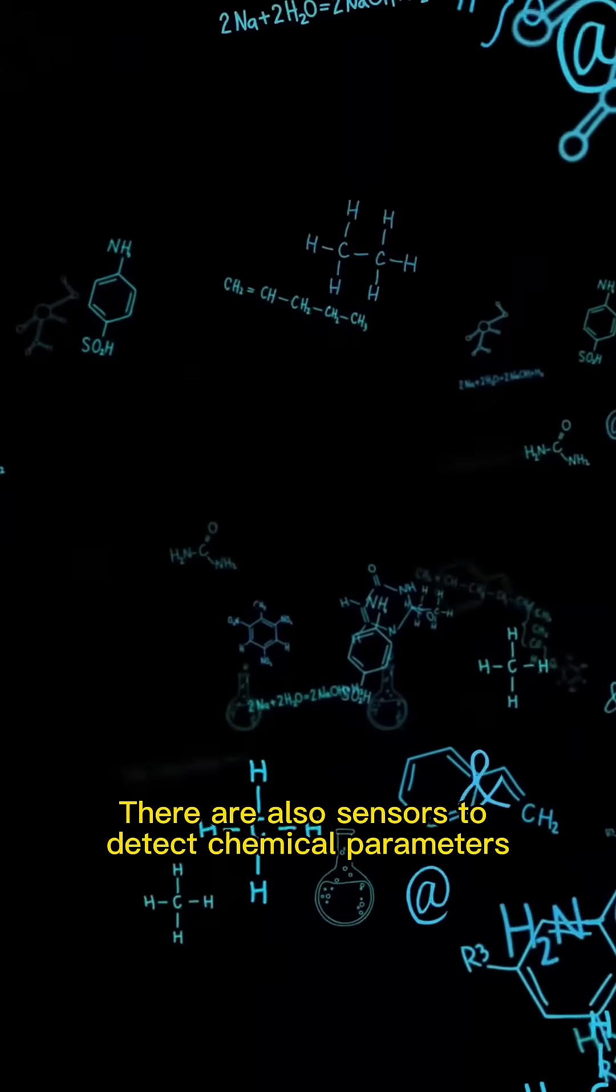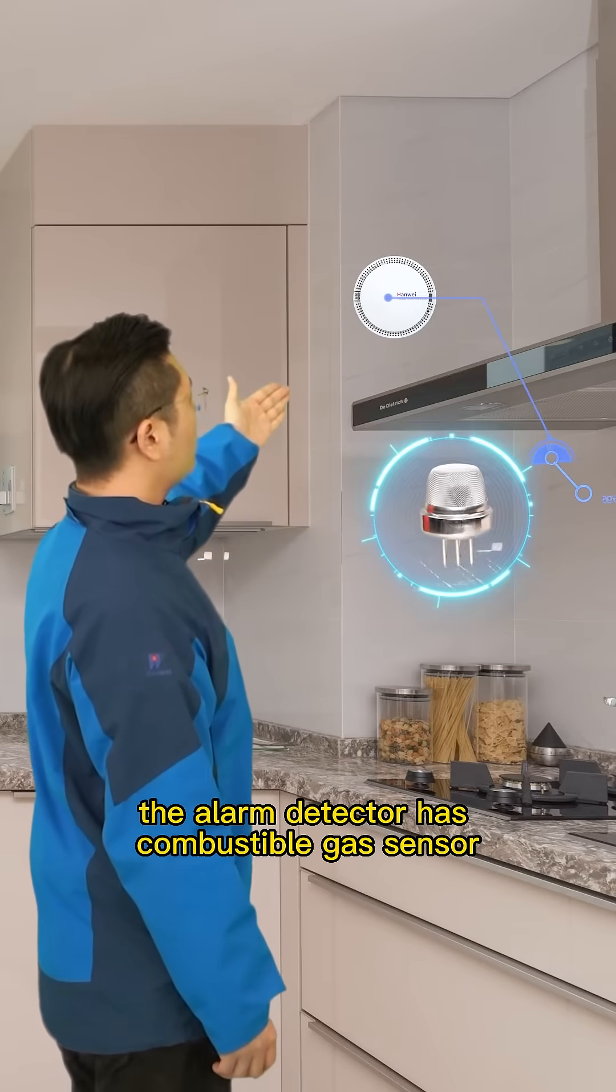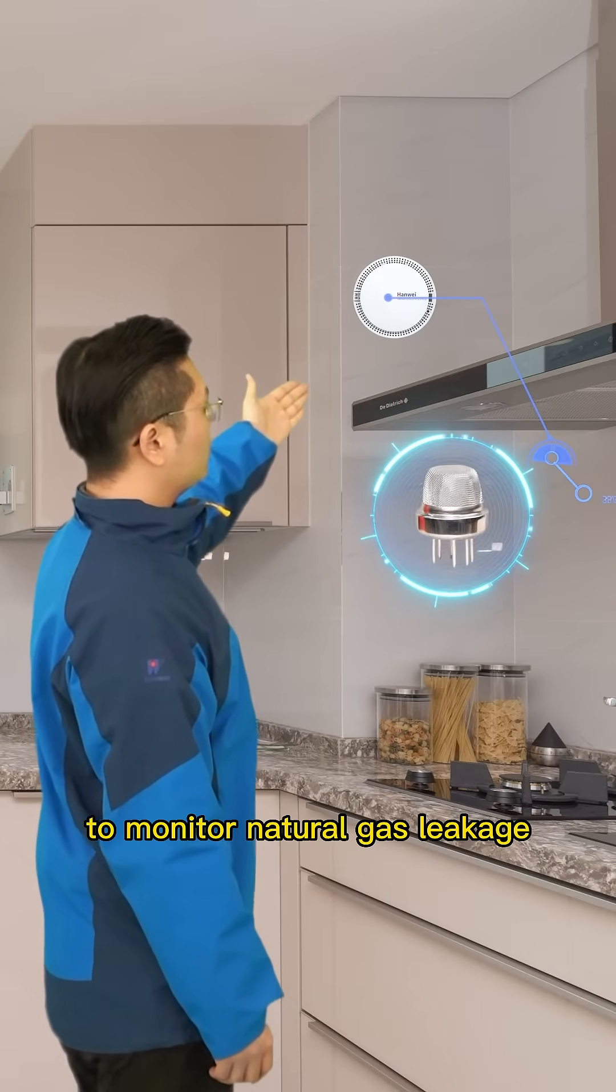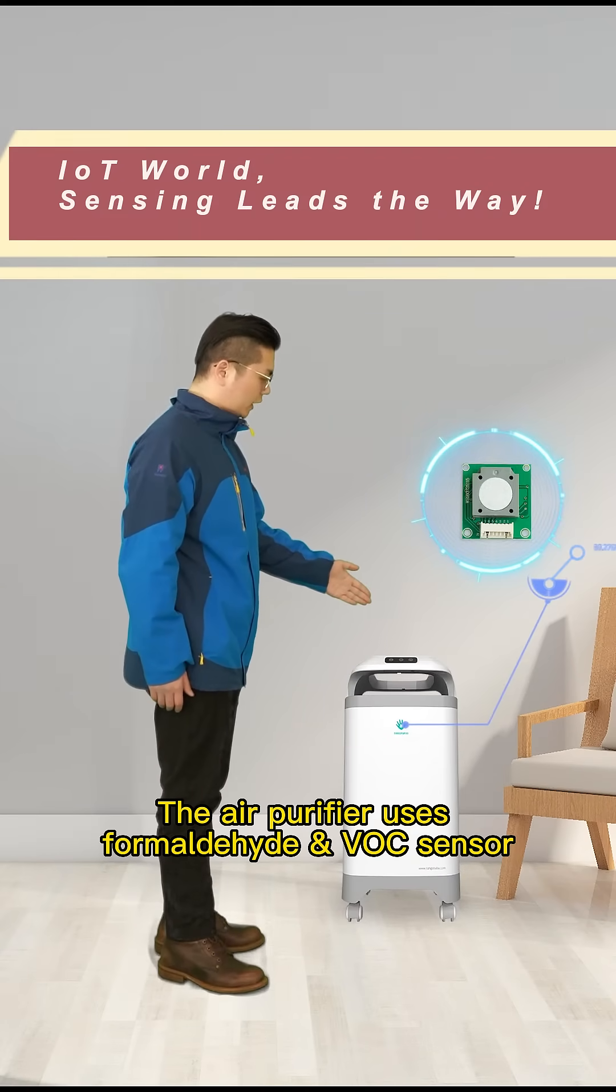There are also sensors to detect chemical parameters. In the kitchen, the alarm detector has combustible gas sensor to monitor natural gas leakage. The air purifier uses formaldehyde and VOC sensor.